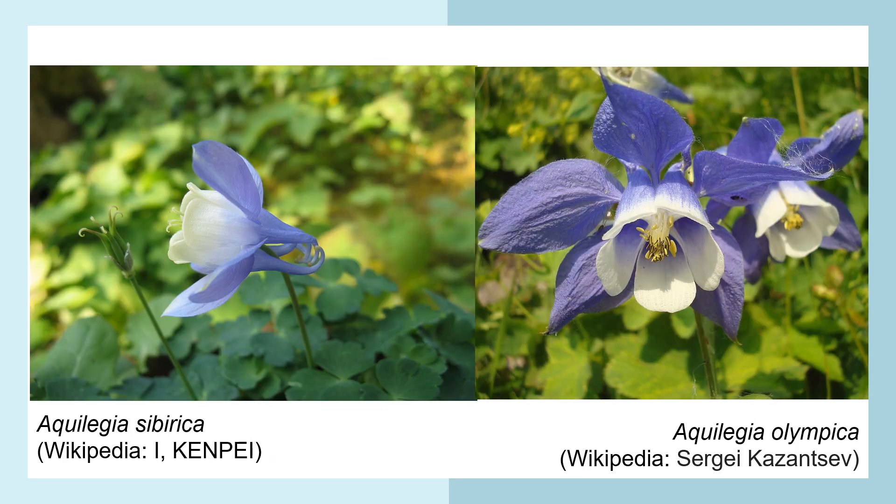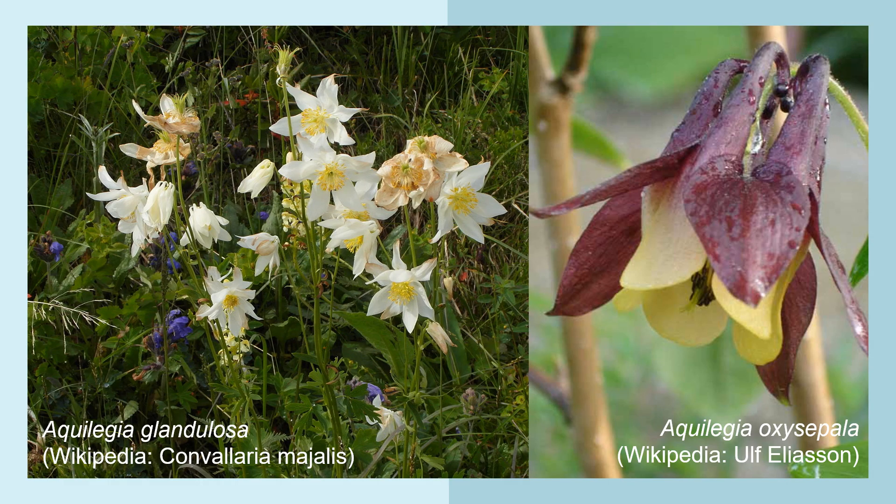Here to the left we have Aquilegia sibirica, and to the right Aquilegia olympica. In Sibirica the inner petals are nearly totally white, whereas olympica has a little bit more blue color, though this is difficult to say based on just two photos. To the left we have glandulosa, white, and then oxysepala to the right.